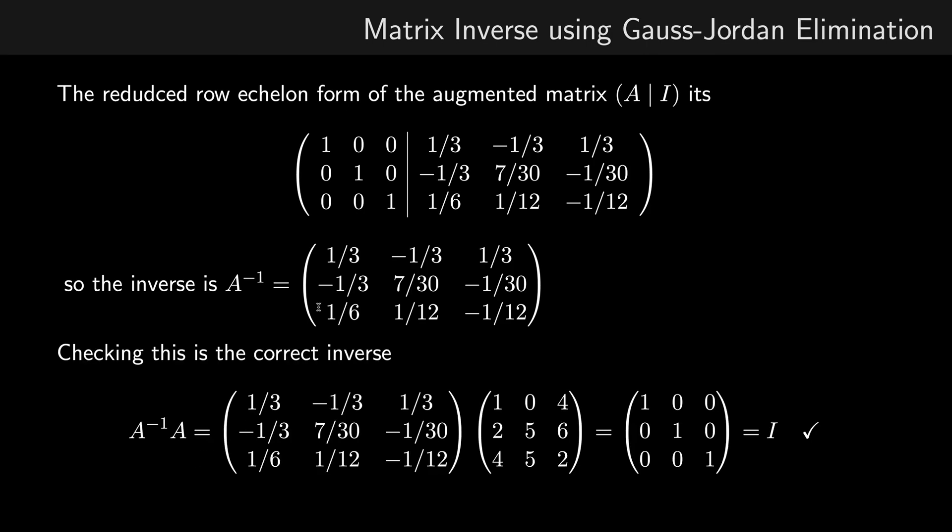I've done that here. I've taken the inverse matrix which we calculated using Gauss-Jordan elimination and multiplied it by the original matrix A. We can see we get the identity matrix, so we know our inverse is correct.